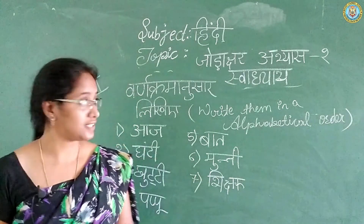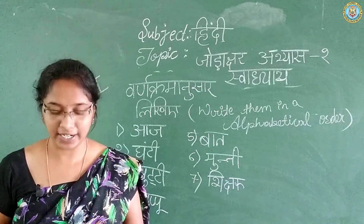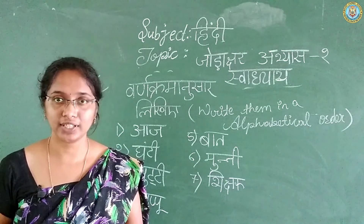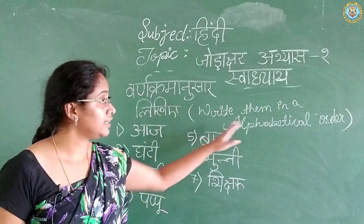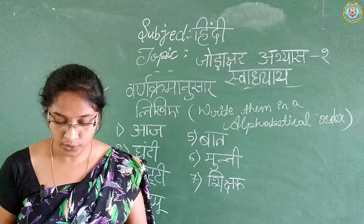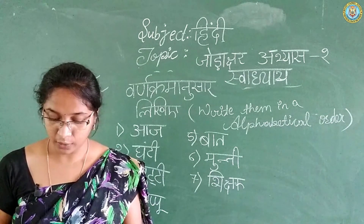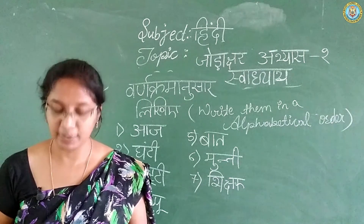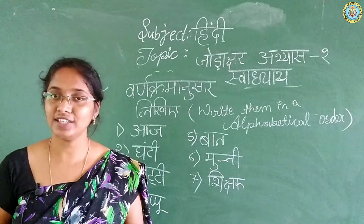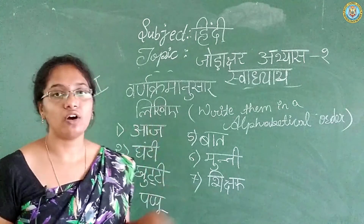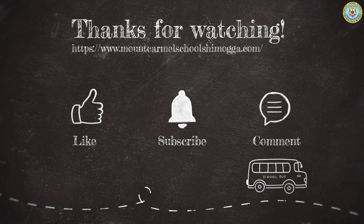So in this part, what have we done today? Read and write, and answer the following questions. After that, Varn Kramanusaar — write words in alphabetical order. The fourth exercise is: Meeche Dihye — identify the pictures given below and write their names. That is your homework for today. I will see you in the next class. Write all of these in your notebook. See you next week!